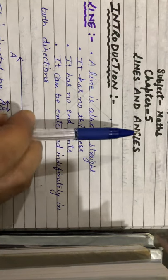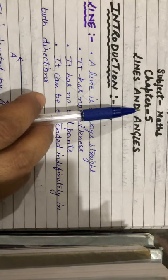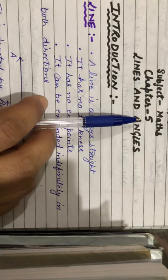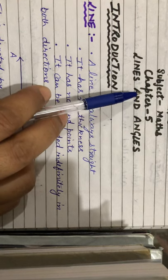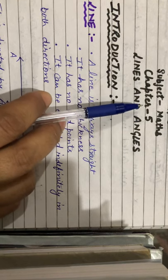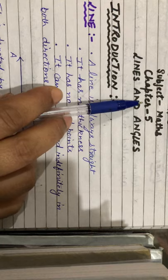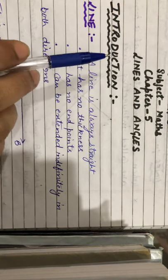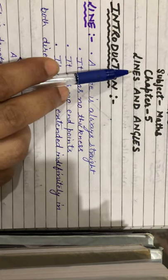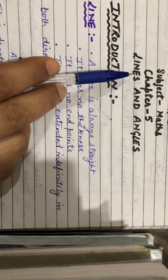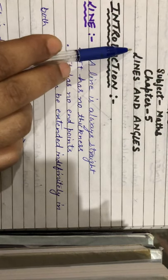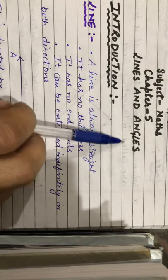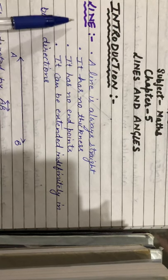Good morning everyone. So far we have completed 4 chapters of your NCRT book before vacations. Now we are going to start chapter 5, Lines and Angles. So let us recall what is the meaning of line and how angles are formed. Let us see the introduction part.